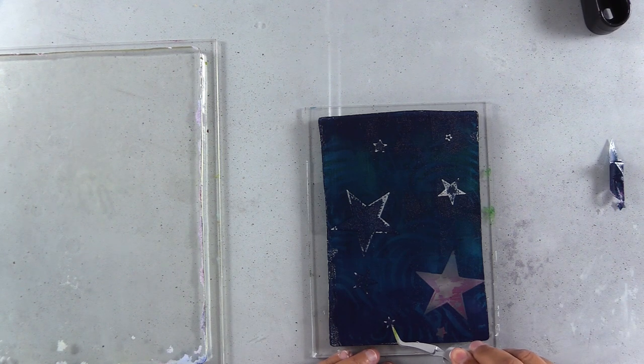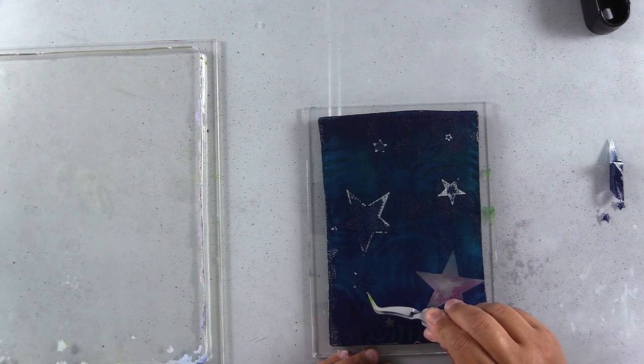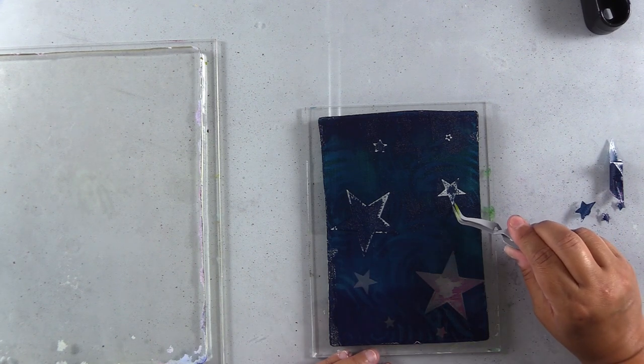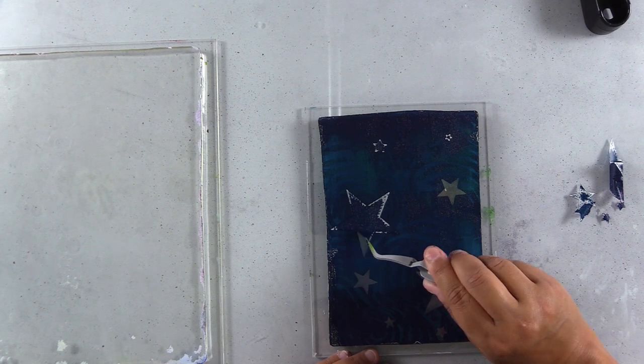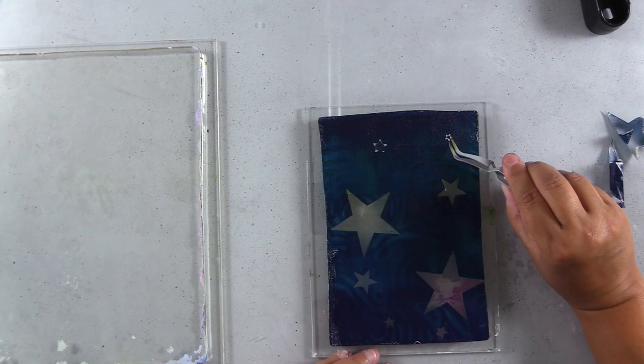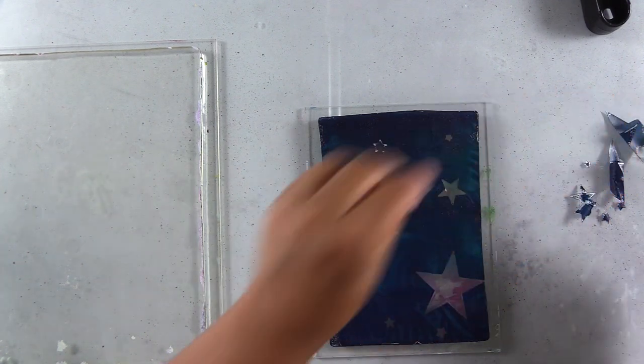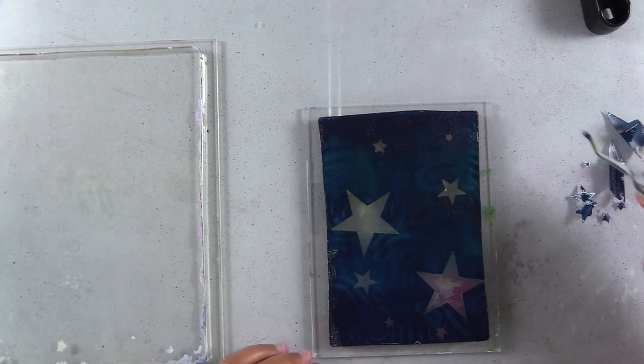I have my tweezers and I'm going to gently remove the stars from the gel plate without puncturing the gel plate. You want to make sure that the tips of your tweezers don't dig into your gel plate and cause a puncture because you're going to get paint stuck in there. It's going to cause some issues.